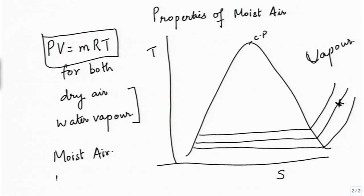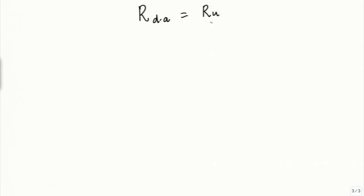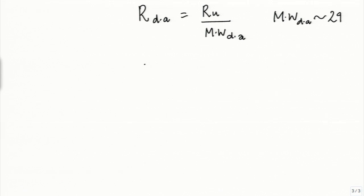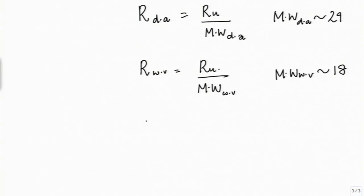Both dry air and water vapor together constitute moist air, and we can think of both as ideal gases and apply the ideal gas equation to each. The specific gas constant R will be different for air — call it R_dry_air — and different for water vapor — call it R_water_vapor. R for dry air is the universal gas constant divided by the molecular weight of dry air, approximately 29. R for water vapor uses molecular weight of water, approximately 18, since water is H₂O — two hydrogens and one oxygen.